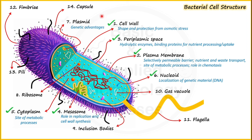Regarding ribosomes: they are freely present in the cytoplasm and take part in protein synthesis. Ribosomes in bacterial cells are of the 70S type, which is further made up of two subunits — 50S and 30S. In contrast, eukaryotic cells such as plant and animal cells have 80S type ribosomes.